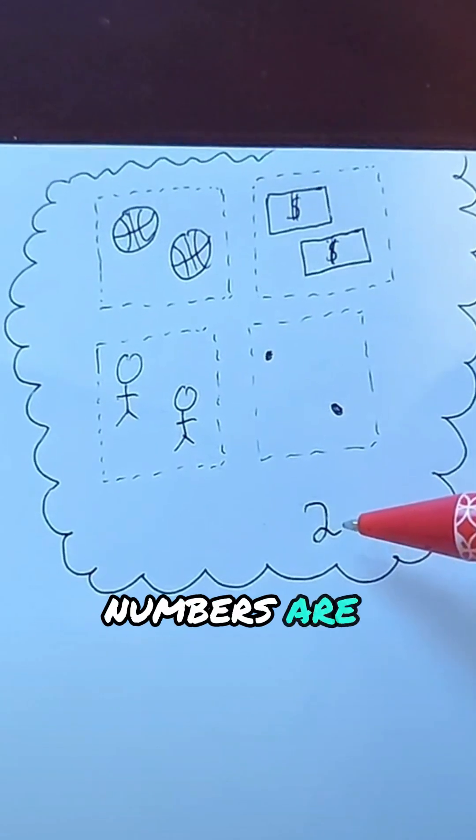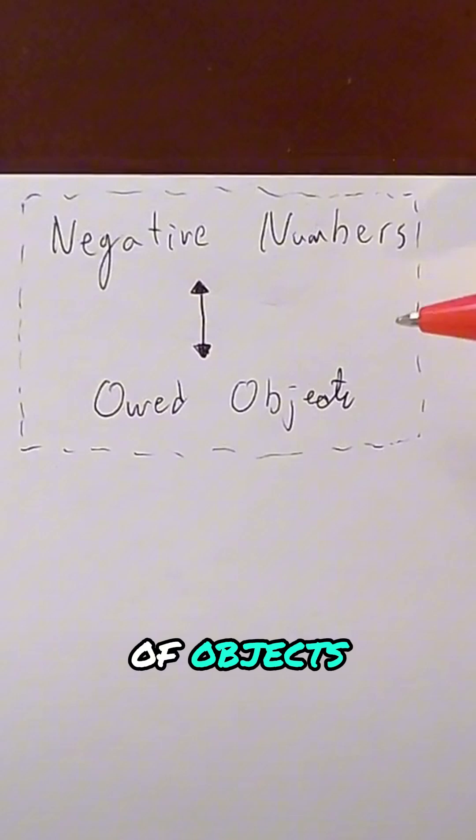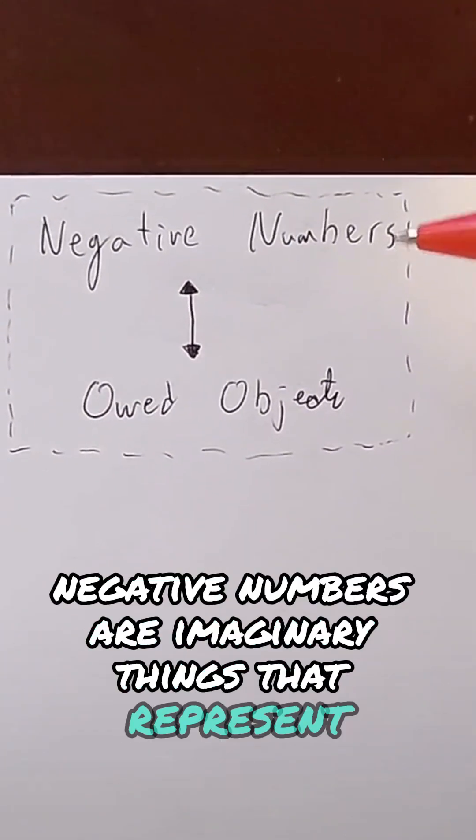In the same way that positive numbers are imaginary representations of objects, negative numbers are imaginary things that represent owed objects.